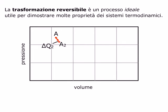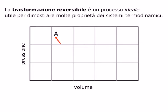A ogni passaggio da uno stato allo stato successivo vi è uno scambio infinitesimo di calore delta Q. Consideriamo due qualsiasi stati intermedi della trasformazione. Per passare da AN ad AN più 1, il sistema che si trovava alla temperatura TN è stato messo in contatto con una sorgente di calore alla temperatura TN più 1, che differisce infinitamente poco da TN. C'è quindi stato uno scambio di una quantità infinitesima di calore delta QN che è responsabile del passaggio del sistema al nuovo stato AN più 1.